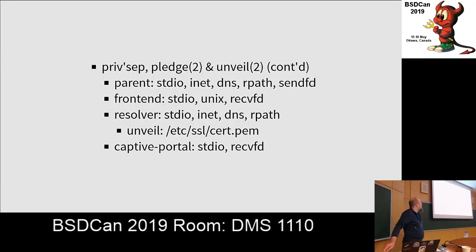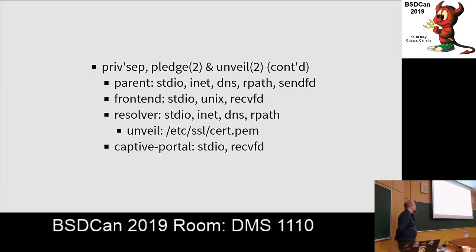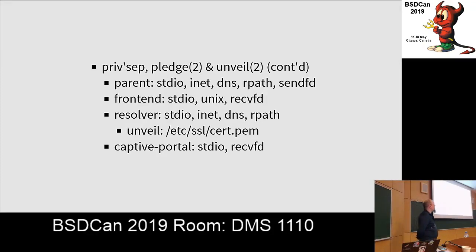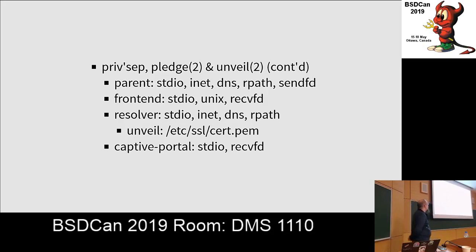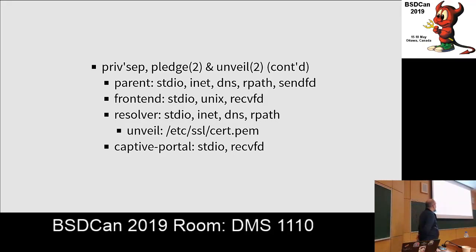For example, the parent process is allowed to open a socket to the internet or open the DNS socket on port 53, and it can open files for reading and pass them on to other processes, but no writing. The frontend process can only work on existing open file descriptors, receive them from the parent, and accept connections on the control socket. The resolver process is somewhat more powerful because it actually needs to talk to the internet — so it's allowed to do that and read files. But we don't want it to read all over the filesystem, so we only unveil the certificate bundle needed for DNS over TLS validation. So it can only see that one file.